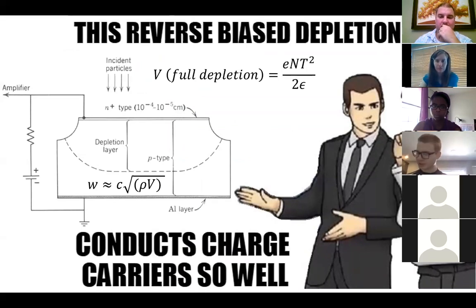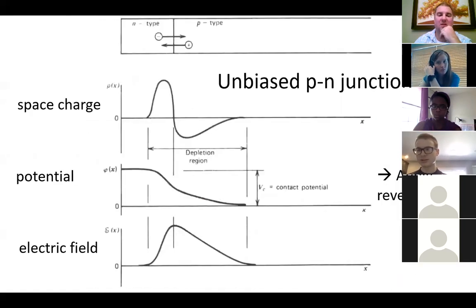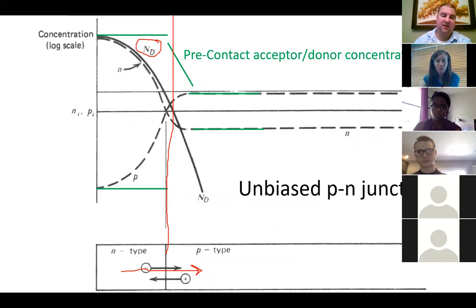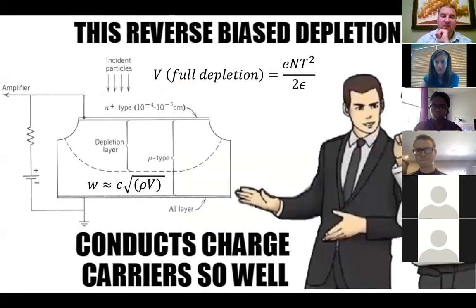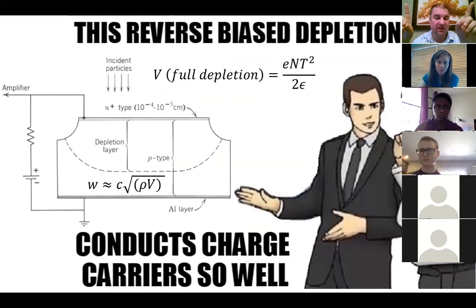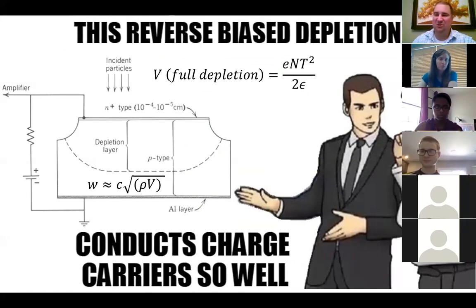Second student question: why does the reverse bias deplete the region of charge carriers? The reverse bias pulls extra electrons out of the N-type and extra holes out of the P-type, leaving a region with so few charge carriers that current is negligible. The product p×n is still constant but both individual values are extremely small — so effectively no current flows until radiation creates new carriers.